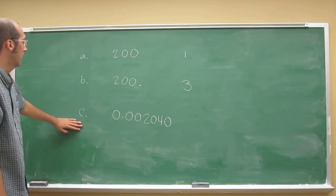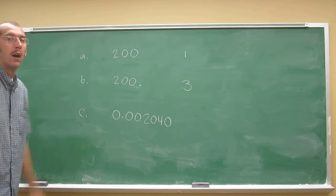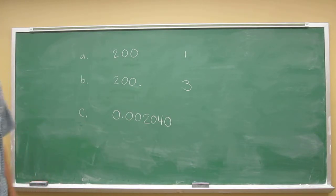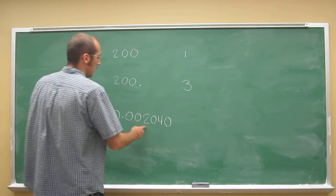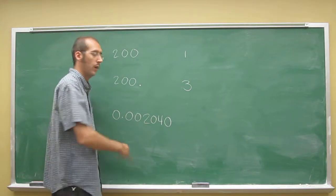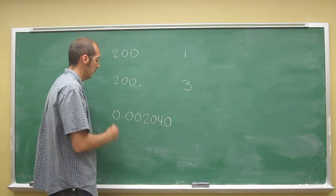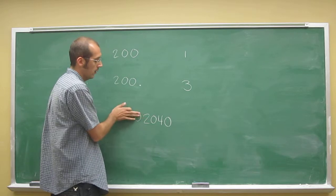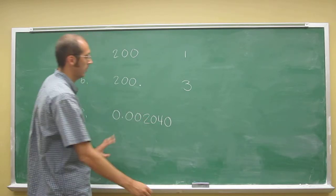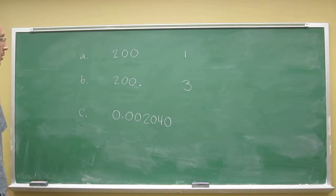And then here, leading zeros are insignificant, always. Until the first non-zero number, you don't have any significant digits. So zero, zero, zero, insignificant. In fact, there's a better way to express this. We'll talk about it. It's called scientific notation.